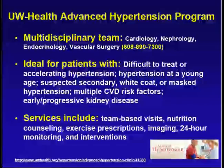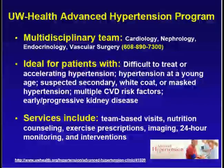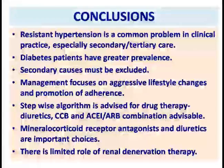I recommend that all who deal with diabetes, hypertension, and resistant hypertension consider an advanced hypertension program with a multidisciplinary team. This is ideal for patients with difficult-to-treat or accelerated hypertension, hypertension at young age, suspected secondary, white-coat, or masked hypertension with multiple cardiovascular risk factors, and early or progressive kidney disease. Services include team-based visits with multiple providers, nutritional counseling, exercise prescription, imaging, 24-hour monitoring, and interventions — the way forward to achieve optimal blood pressure control in resistant hypertension.